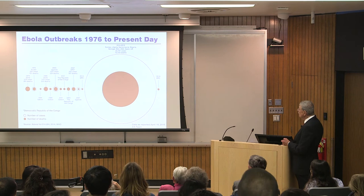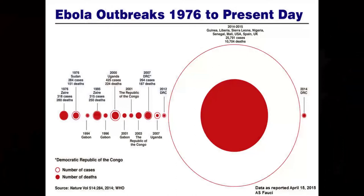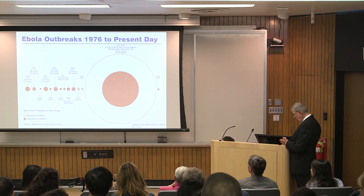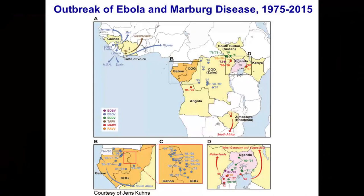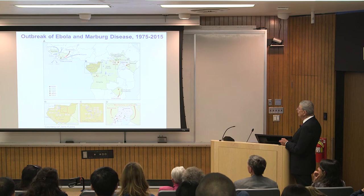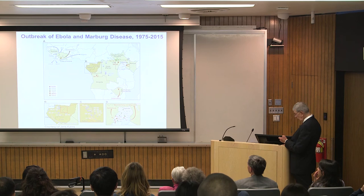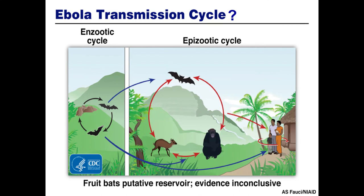There have been 24 outbreaks since that time, and the recent one is a tsunami compared to all the others. We're now close to 27,000 cases with over 11,000 deaths occurring in three areas of West Africa. The thought is that it began in the forests of Guinea — a country where I lived for two years. Sierra Leone, Liberia, and then multiple other outbreaks of these 24 have occurred.